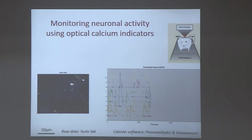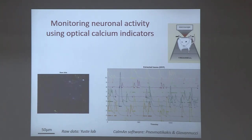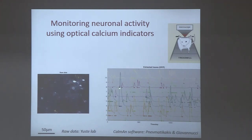I also have a shameless plug for software developed in my group to automatically extract time traces of activity of individual neurons from such videos. This has been a major bottleneck in experimental laboratories, because previously neurons were delineated manually, taking more time to analyze data than to do experiments. Now we have a package that in most cases allows automatic extraction of activity traces. Because what is imaged here is calcium concentration in neurons, the spikes are low-pass filtered, requiring an additional deconvolution step to extract actual spike times from those transients.